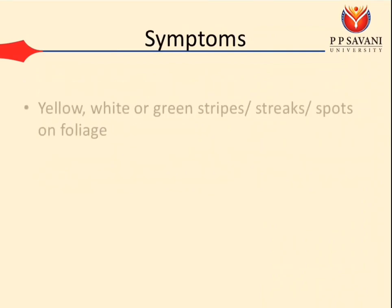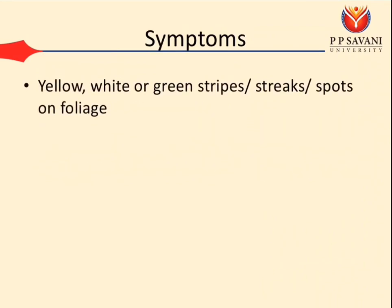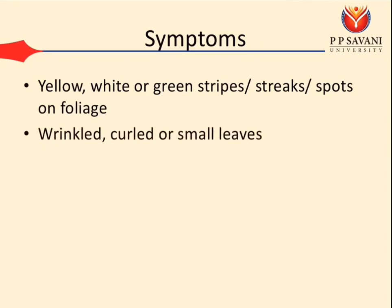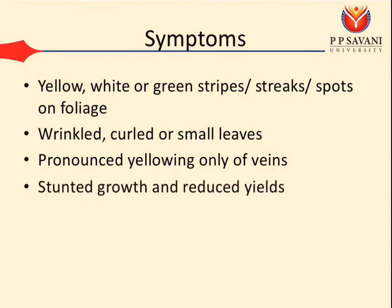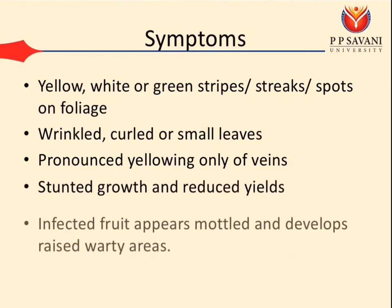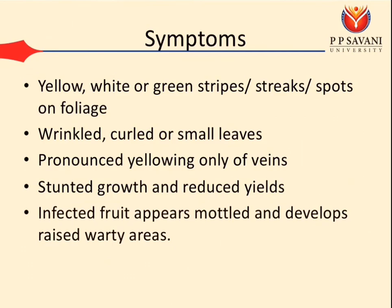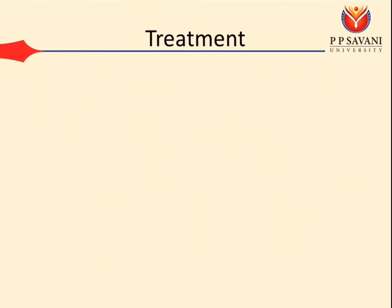Symptoms of Cauliflower Mosaic Virus include yellow, white, or green strips, spots or mottling on foliage, wrinkled, curled, or small leaves, pronounced yellowing only on veins, stunted growth and reduced yields. Infected fruit appears mottled and develops raised, warty areas.